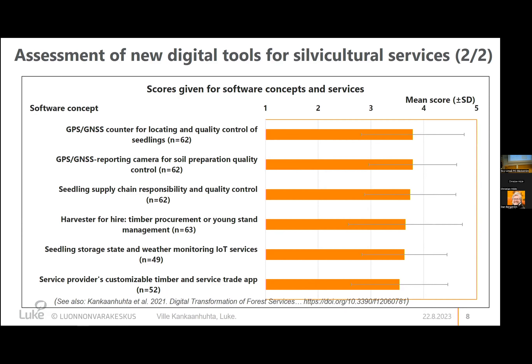There are also seedling counters and quality control accounting, obtaining coordinate information and quality of work for operations. For soil preparation, there is reporting through cameras and detection of different site characteristics — such as soil types — using machine learning. Different tools fit different service providers, and in that sense there is a market for all of them.